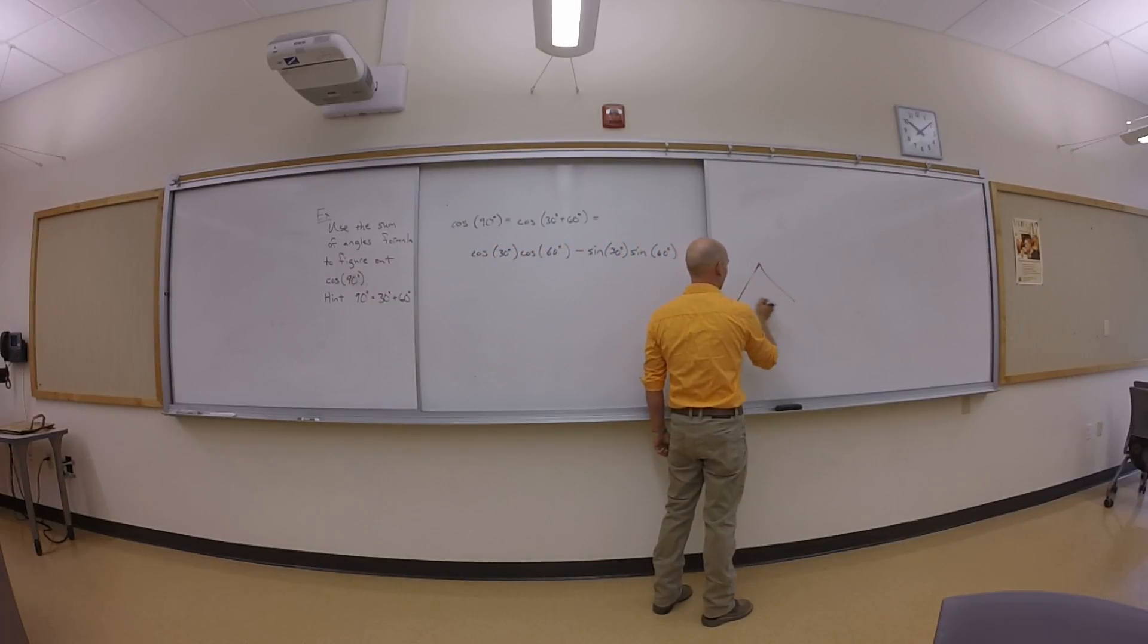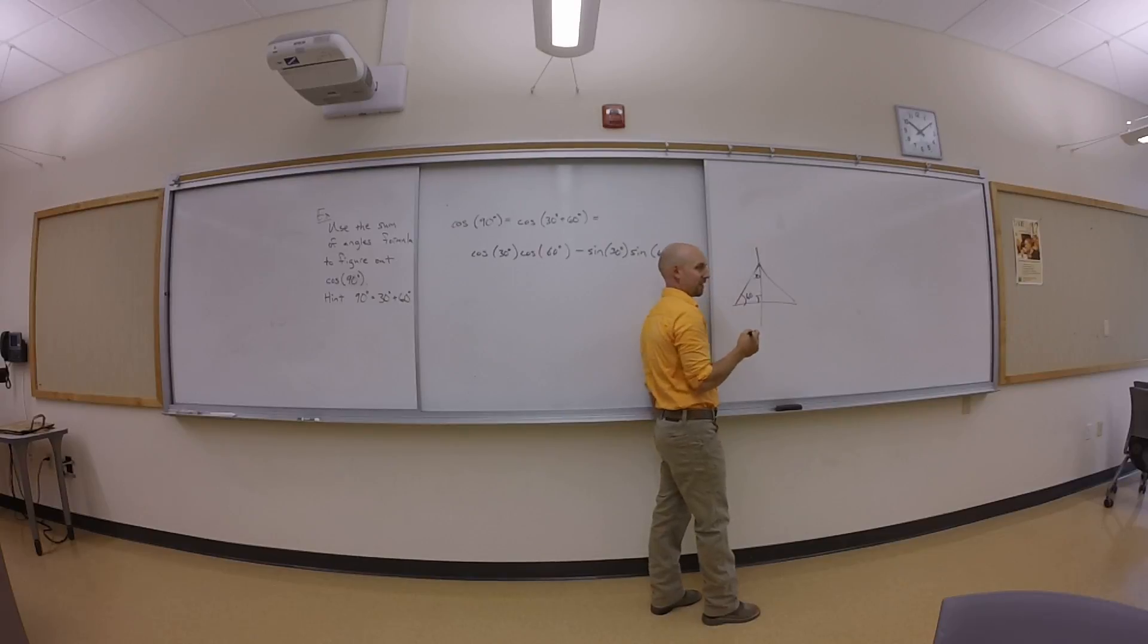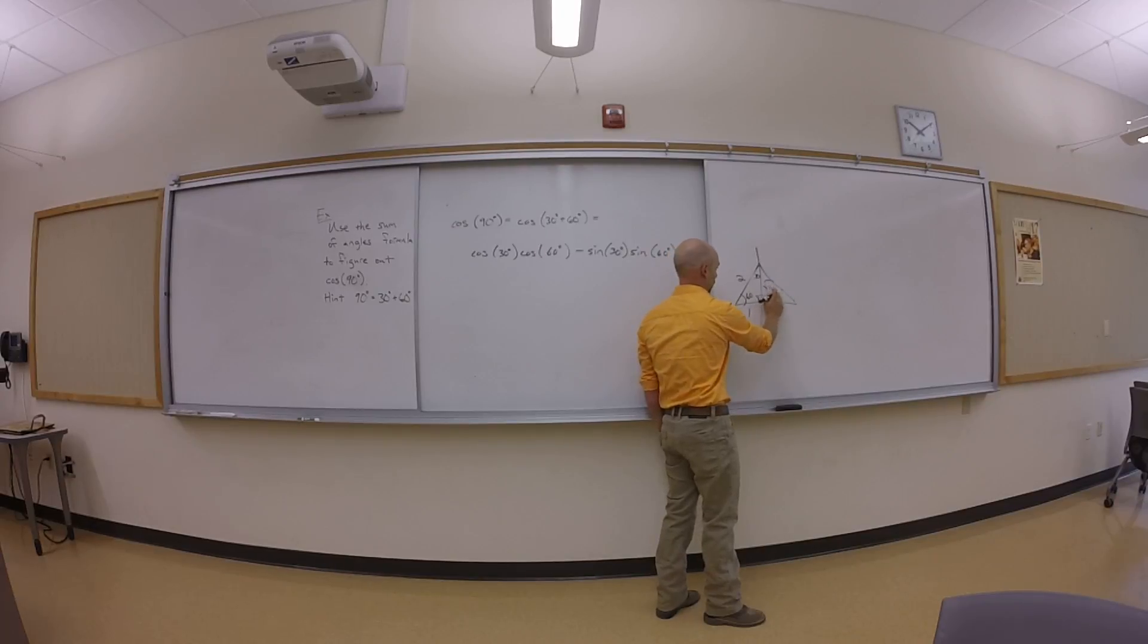I remember this. I start with a 60 degree triangle, cut it in half. So now this is a 30 and a 90. If this was two, when I cut the bottom in half, what was I left with on this half of the bottom? One. And what's that make the other side? Square root of three.